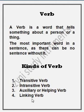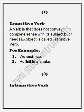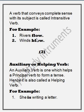Kinds of verbs: transitive verb, intransitive verb, helping verb, and linking verb. First, transitive verb — a verb that does not convey complete sense with its subject. A verb that conveys complete sense with its subject is called an intransitive verb. Intransitive verb को object की कोई ज़रूरत नहीं होती; subject के साथ ही इसकी complete sense आ सकती है। For example: 'River flows' — دریا بہتا ہے; 'Wind blows.'